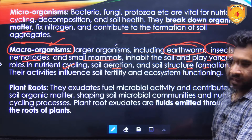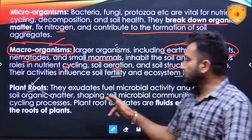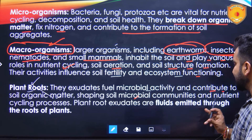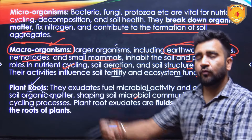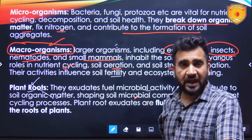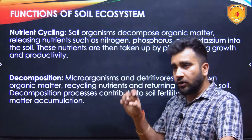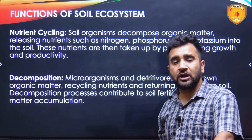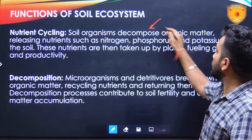Macro organisms include larger organisms like earthworms, insects, nematodes, and small mammals that inhabit the soil and play various roles in nutrient cycling, soil aeration, and soil structure formation. Their activities influence soil fertility and ecosystem functioning. Plant roots also exude substances that fuel microbial activity and contribute to soil organic matter, shaping soil microbial communities and nutrient cycling processes. Movement of water and absorption of minerals and nutrients happens through the roots, so if roots absorb a lot of water, soil moisture will go down.